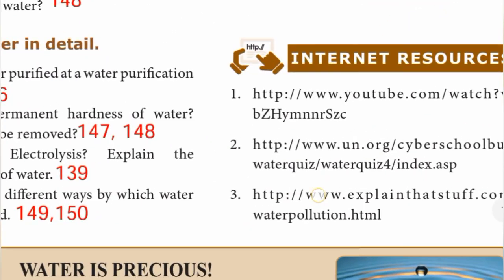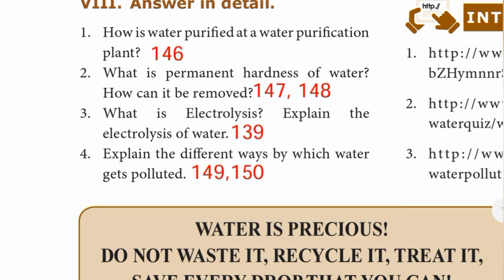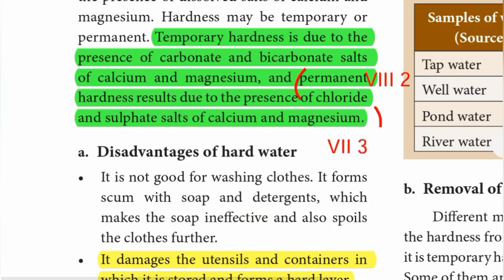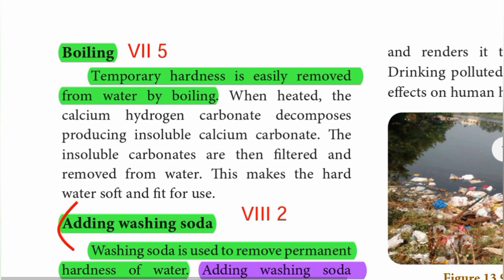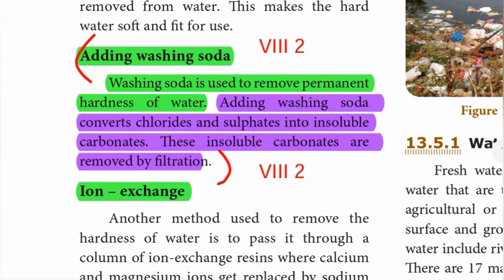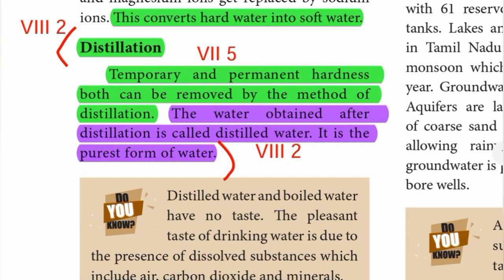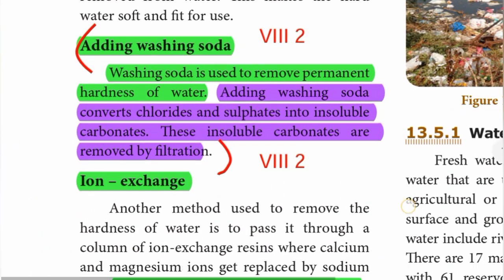Detail question 2: What is permanent hardness of water and how can it be removed? Page number 147. Permanent hardness results due to the presence of chloride and sulfate salts of calcium and magnesium. Adding washing soda — washing soda is used to remove permanent hardness; it converts chlorides and sulfates into insoluble carbonates, which are removed by filtration. Distillation — both temporary and permanent hardness can be removed by distillation. Water obtained after distillation is called distilled water; it is the purest form of water.